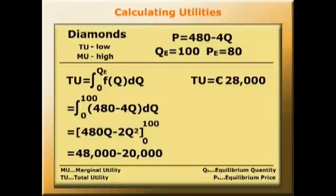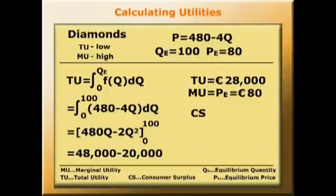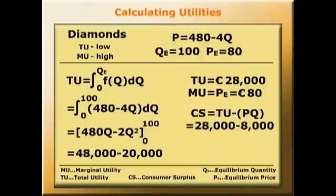So we've established that total utility equals 28,000 euros, but marginal utility, which is the same as the price, is just 80 euros. If we want to find consumer surplus, that's very straightforward. Consumer surplus is the total utility minus PQ at the equilibrium point, which is 28,000 minus 8,000, which equals 20,000.